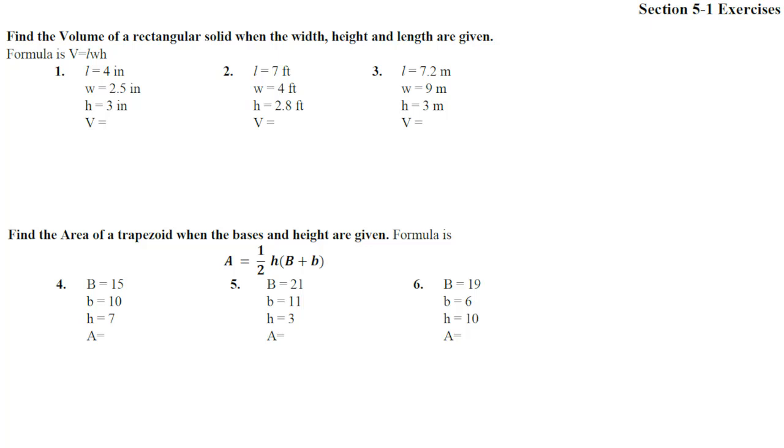Here we are in section 5-1, exercises numbers 1 through 6. It says find the volume of a rectangular solid. So that's like a box when the width, height, and length are given. The formula gives us volume equals length times width times height, LWH.